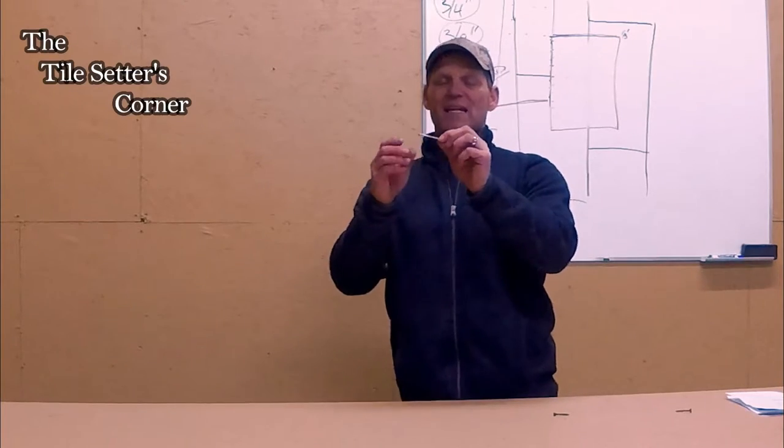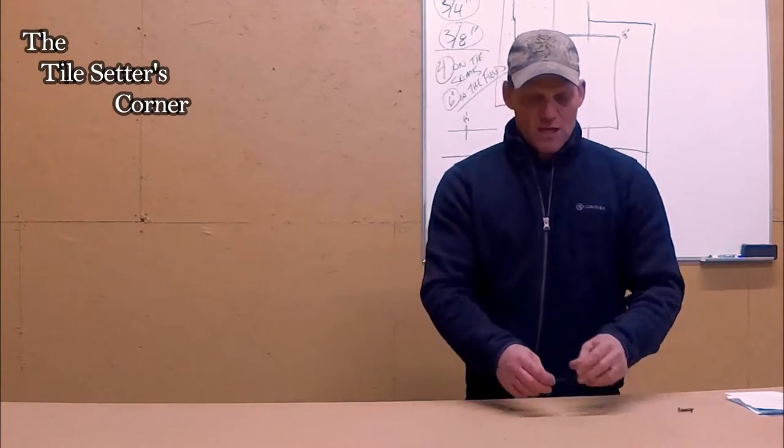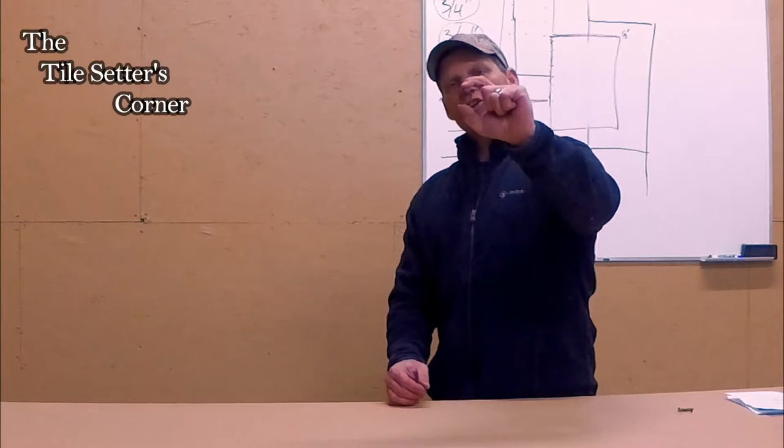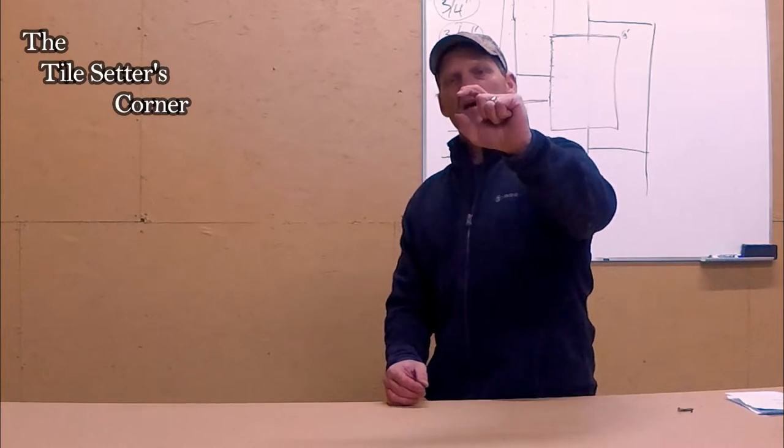So never use a drywall screw. These wood screws that have coarse threads, I don't recommend these. This is the proper screw right here. It's an inch and a quarter, double correlated underlay screw.